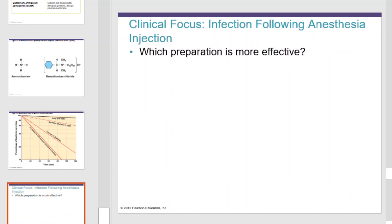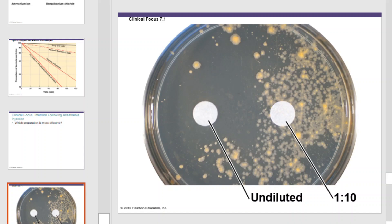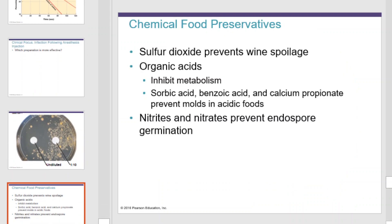Chemical food preservatives include sulfur dioxide, which prevents wine from spoiling. Organic acids inhibit metabolism — sorbic acid, benzoic acid, and calcium propanoate prevent molds in acidic foods. Nitrites and nitrates prevent endospore germination. These are all things you can look for on the labels of products in your own home.